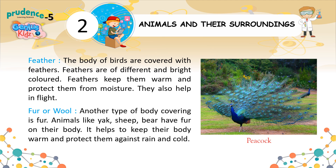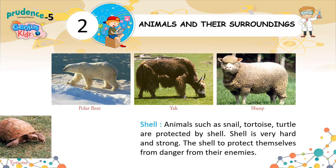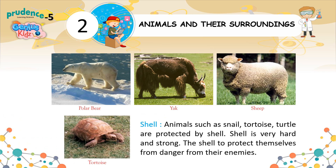Fur. Another type of body covering is fur or wool. Animals like yak and sheep bear fur on their body. It helps to keep their body warm and protect them against rain and cold. Shell. Animals such as snail, tortoise, and turtle are protected by a shell. The shell is very hard and strong and protects them from danger from their enemies.